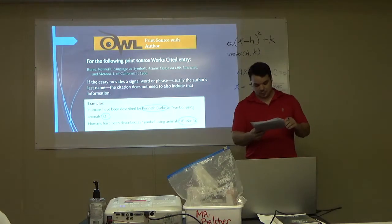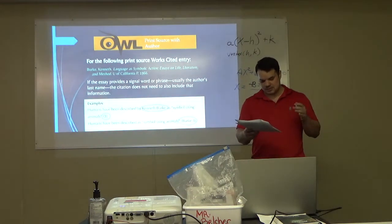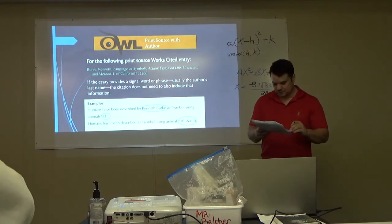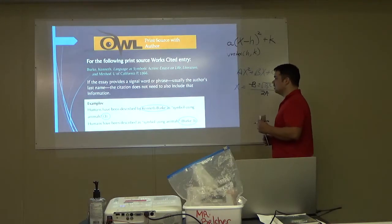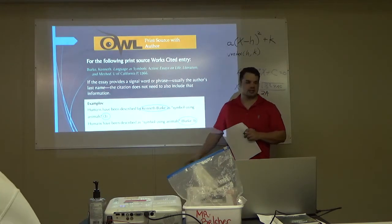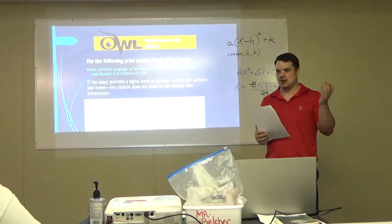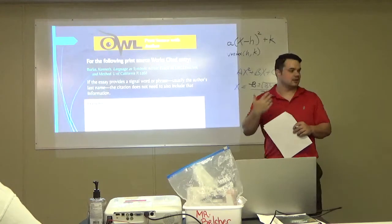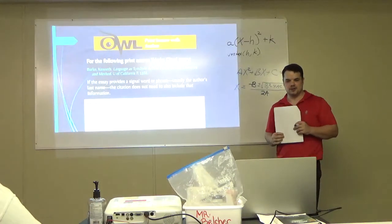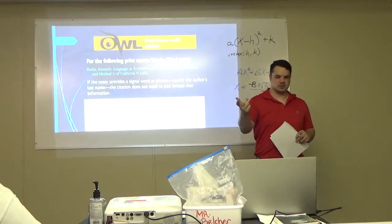For print sources like books, magazines, scholarly journal articles, and newspapers, provide a single word or phrase - usually the author's last name - and a page number. If you provide the author's name in the sentence, you do not need to include it in a parenthetical citation. The example must correspond to an entry that begins with that name on the left-hand margin of the works cited list. Sometimes it can be like a short title - if you don't have a direct author, you can just put the title and the page number. If it's a really long title, just put the first two words - that'll help out a lot.